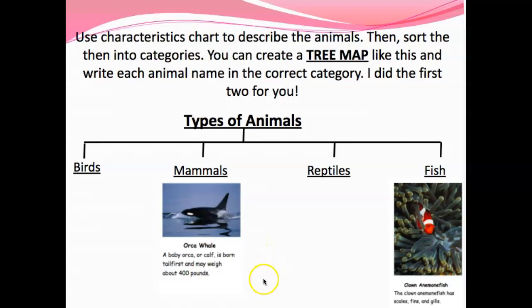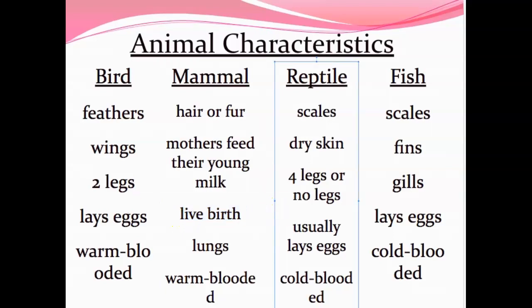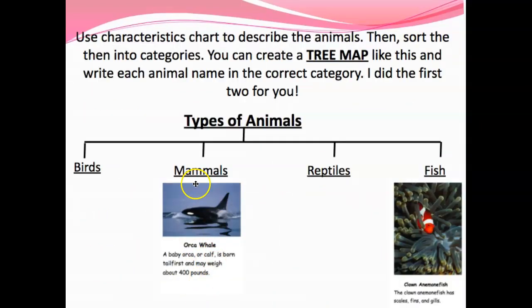I sorted the first two for you. I read that an orca whale — a calf is born tail first and may weigh up to 400 pounds. I thought it was a fish at first, but it says it's born, and I went back to my chart and fish lay eggs, so that can't be a fish. Mammal has a live birth, so I figured an orca must be a mammal and I wrote it under mammal. For the clown anemone fish, it says it has scales, fins, and gills — so from what I know about fish I knew that was a fish.